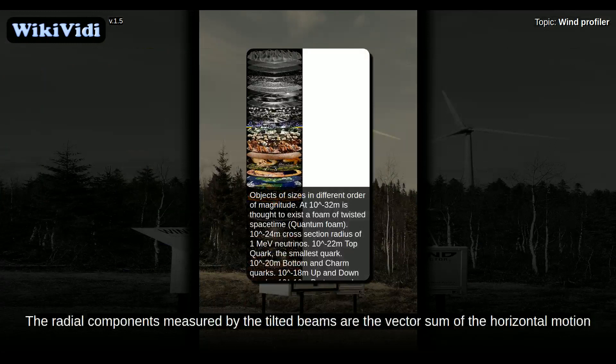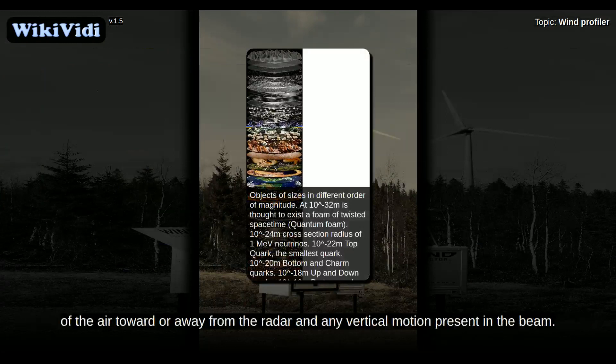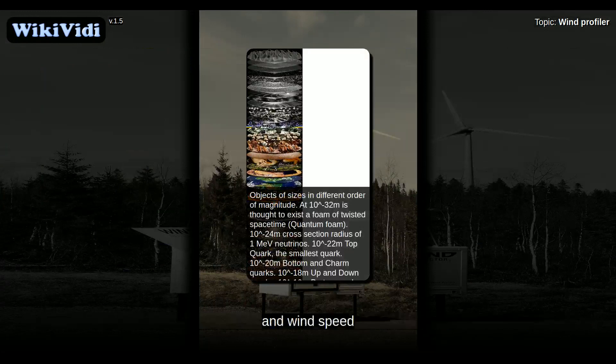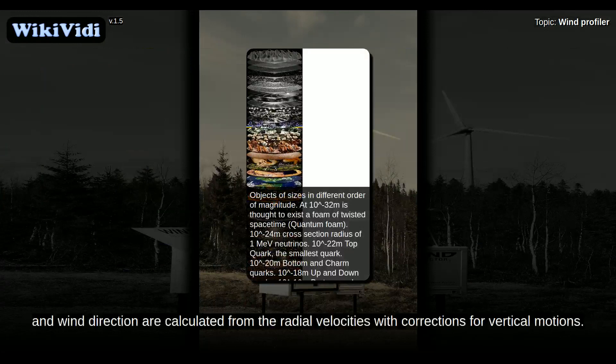The radial components measured by the tilted beams are the vector sum of the horizontal motion of the air toward or away from the radar and any vertical motion present in the beam. Using appropriate trigonometry, the three-dimensional meteorological velocity components, wind speed, and wind direction are calculated from the radial velocities with corrections for vertical motions.